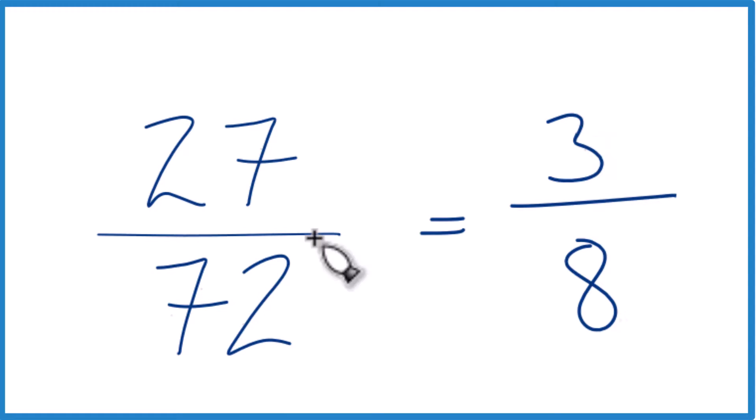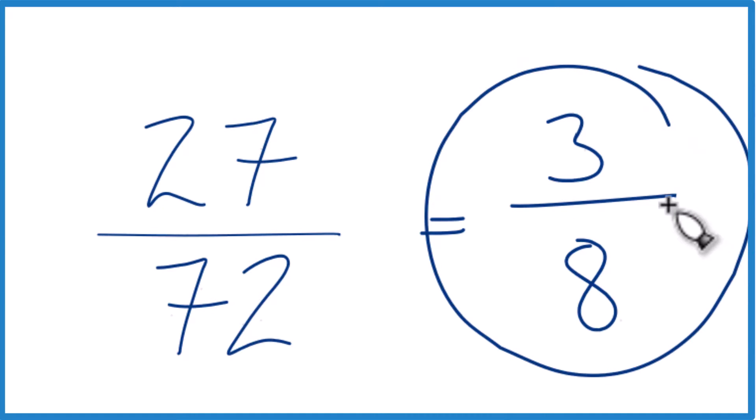If you divided 3 by 8, or 27 by 72 in a calculator, you'd get the same decimal answer. It's just that 3/8 is in lowest terms.